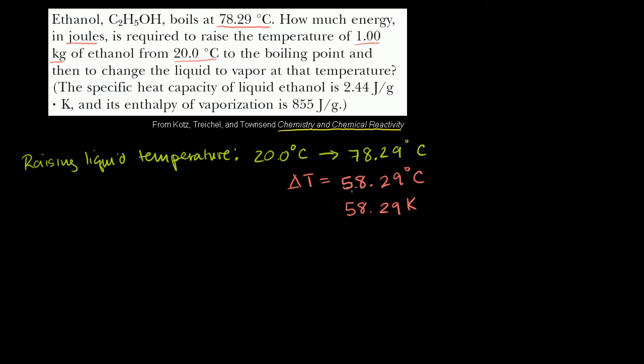So let's figure out how much energy is required to raise that temperature. So we want to delta T, we want to raise the temperature 58.29 Kelvin. Let me change it to Kelvin, because that looks like what our units are given in terms of specific heat.